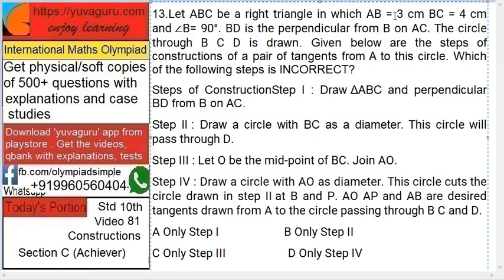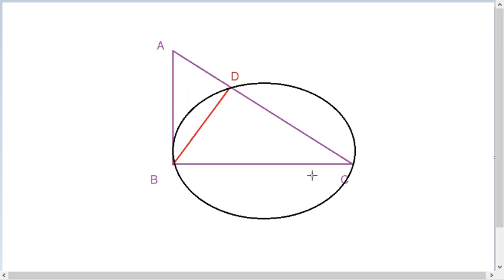Let ABC be a right triangle in which AB = 3 cm, BC = 4 cm, and angle B = 90°. BD is the perpendicular from B on AC. The circle through B, C, and D is drawn. Given below are the steps of construction of a pair of tangents from A to this circle. Which of the following steps is incorrect?